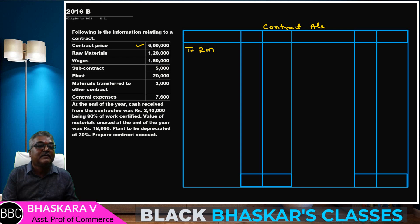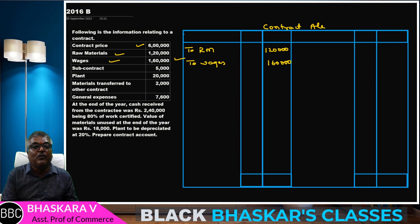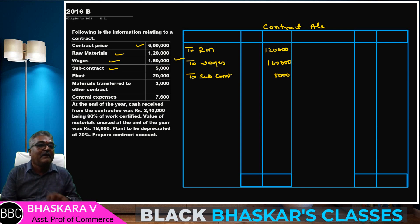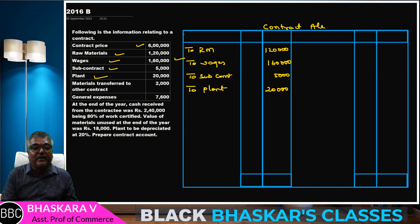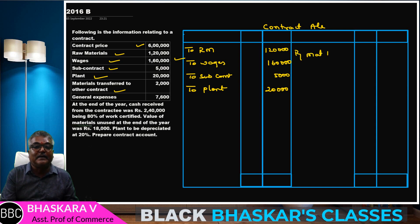Okay students, same problem. I will copy: raw materials 1 lakh 20,000. Then wages expenses — wages 1 lakh 60,000. Then subcontract cost — subcontract cost 5,000. Now contract: plant 20,000. Then material transfer to other contracts — material transfer to other contracts 2,000.